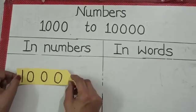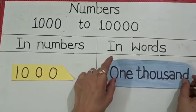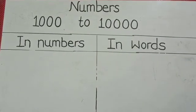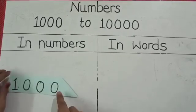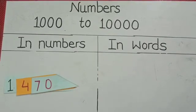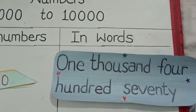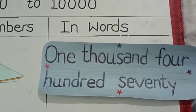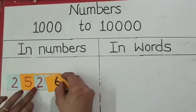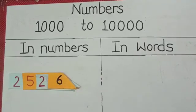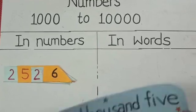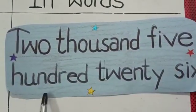First of all students we have 1000 and in words 1000 will be written as this, 1000. Now, 1470 and in words 1470, 2526. So students, numeral becomes 2526 and in words 2526.